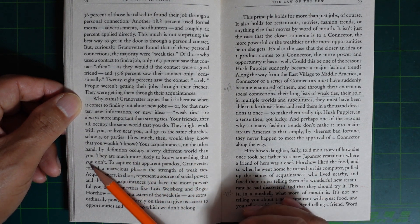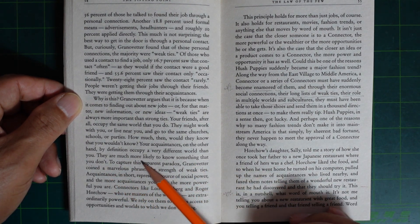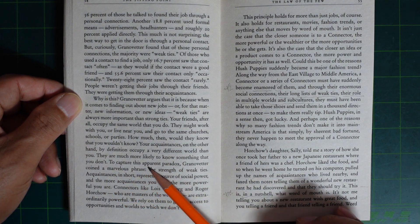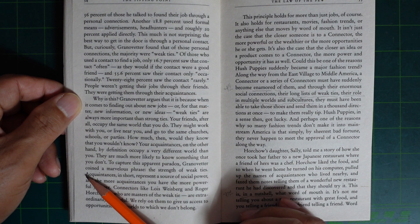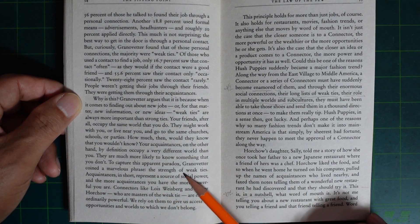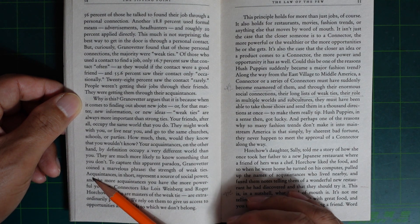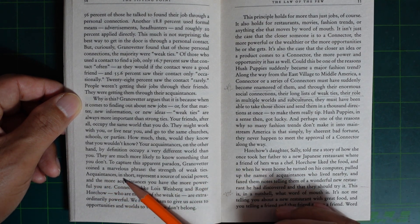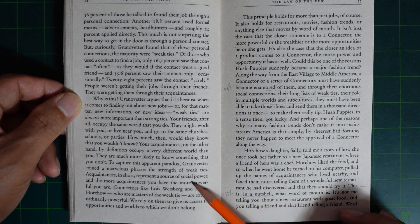They are much more likely to know something that you don't. To capture this apparent paradox, Granovetter coined the marvelous phrase: the strength of weak ties. Acquaintances, in short, represent a source of social power.